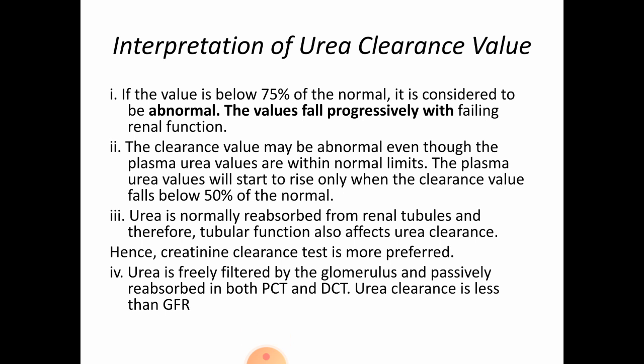The value falls progressively with falling renal function. The clearance value may be abnormal even though the plasma urea levels are within normal limits. Plasma urea values will start to rise only when the clearance value falls below 50 percent of normal.